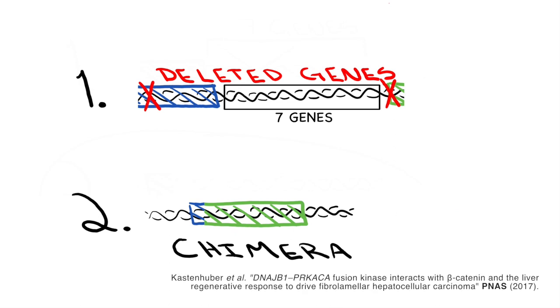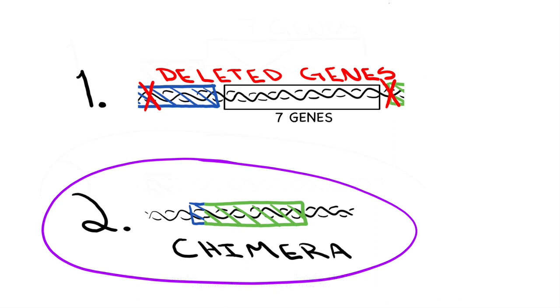But thanks to a collaboration between Memorial Sloan Kettering Cancer Center and Rockefeller University, we don't have to wonder anymore. They learned that the chimera is the important consequence of the DNA deletion.